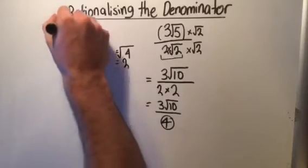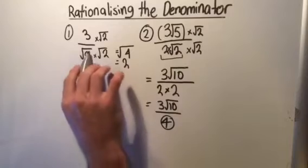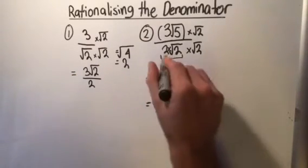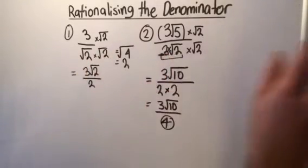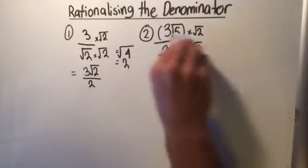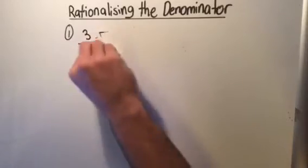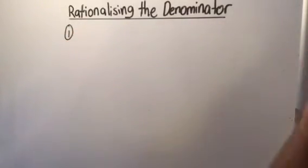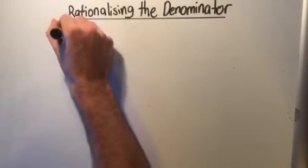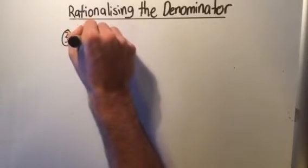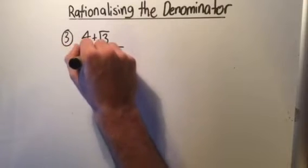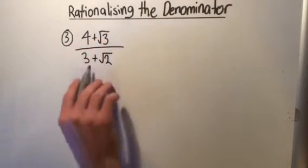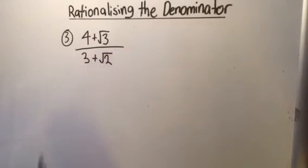Now let's look at what happens when we have two terms on the bottom and one or both are square roots. For example, consider 4 plus root 3 over 3 plus root 2. The 3 on the bottom is rational, but root 2 is irrational. With two terms on the bottom, we use a different approach.